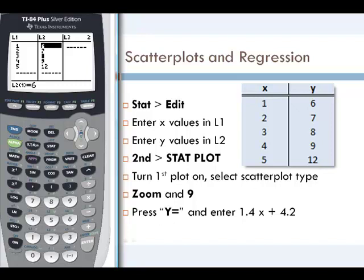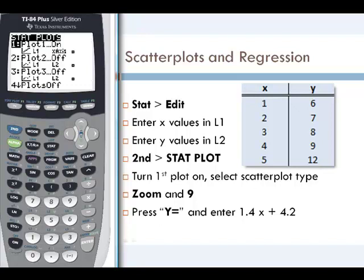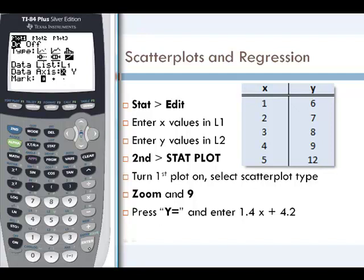We do that by pressing 2nd and then STATPLOT, which is at the Y= key. Our STATPLOTs are already on for Plot 1. We'll look at Plot 1 by pressing enter. If STATPLOTs were off, we could scroll over to 'On' and press enter to turn them on.